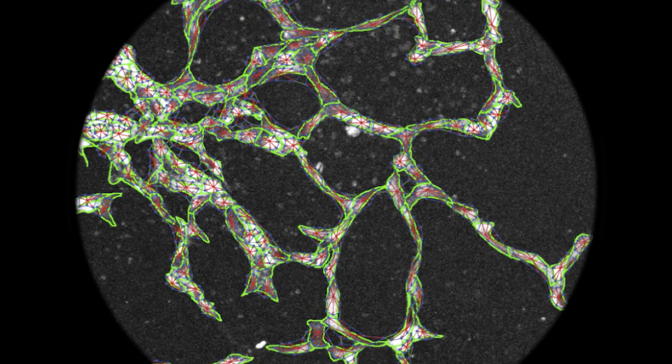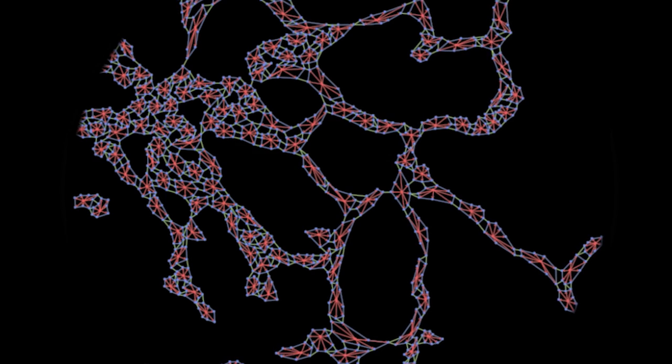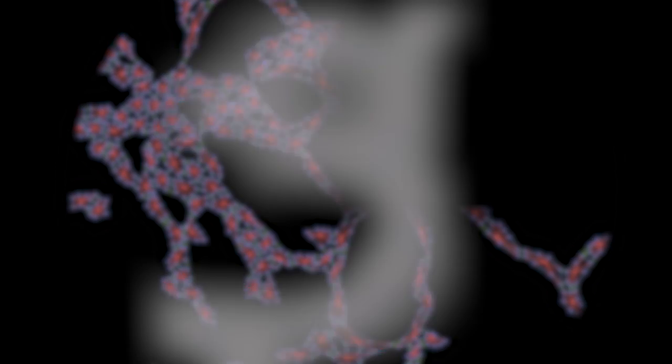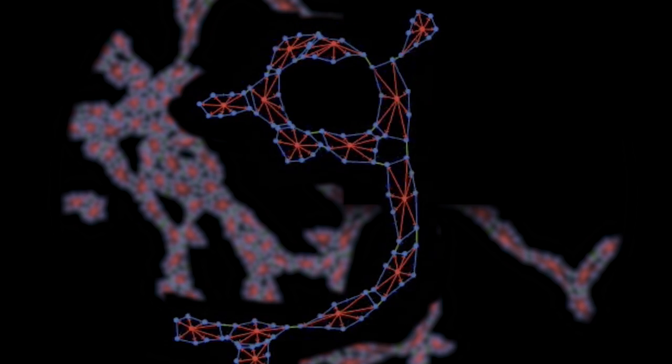We use our simulation sort of as a playground to really understand what the interactions are, what the cells might be responding to, what are the key stimulants, and what are the factors affecting the organization of a blood vessel network. Our computer models tell us what the hypotheses are that we should be testing in the lab.